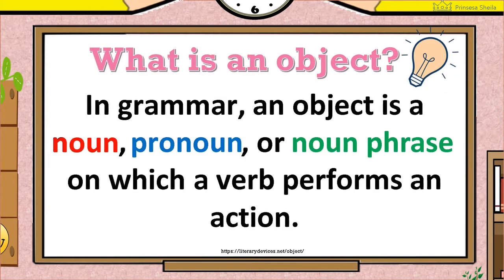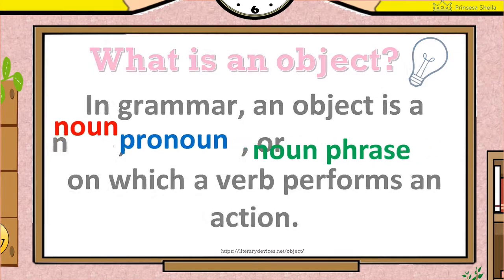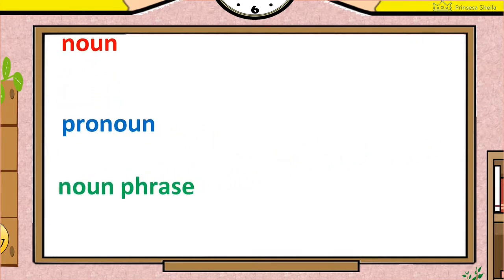What is an object? In grammar, an object is a noun, pronoun, or noun phrase on which a verb performs an action. Let us have a short review about noun, pronoun, and noun phrase.